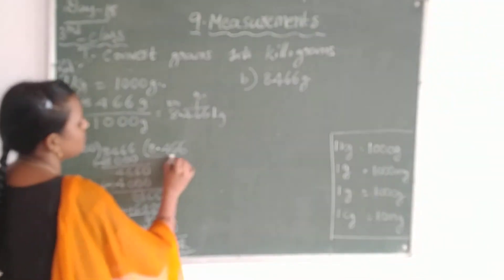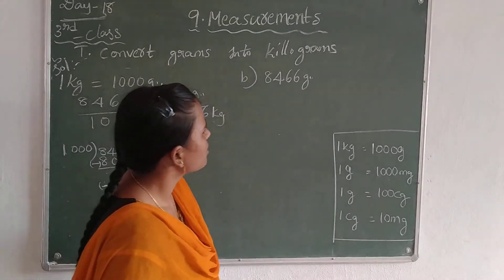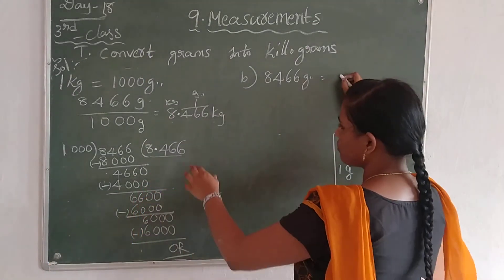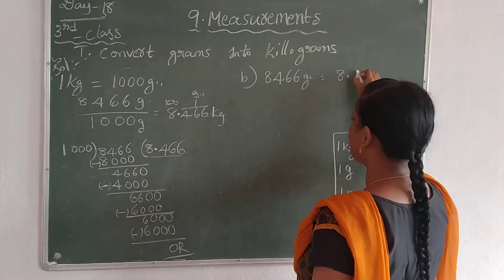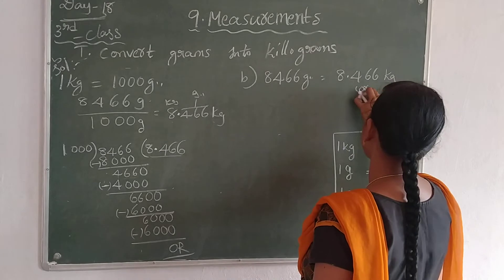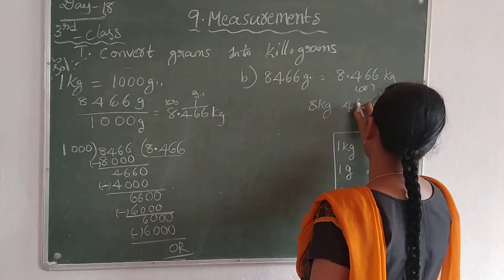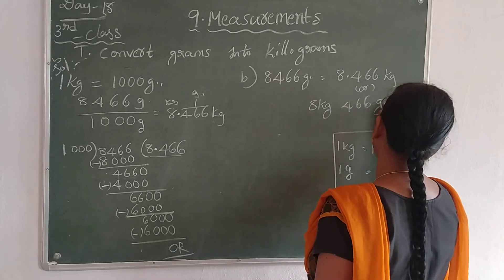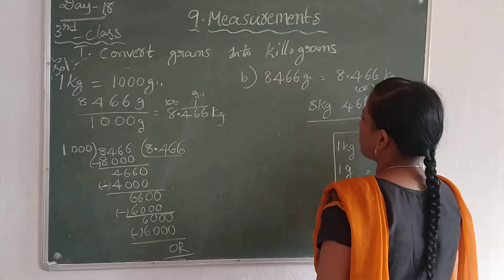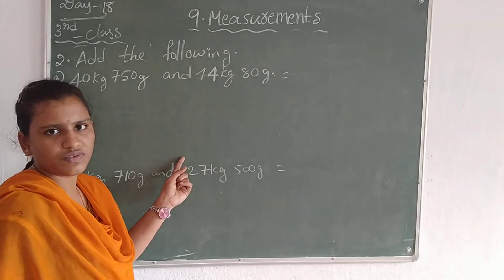This is the answer of this sum. So write first, the answer is 8.466 kg, or 8 kg 466 grams. Understood children this sum?